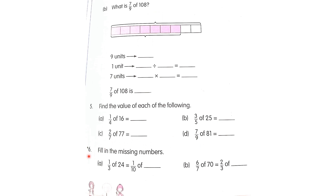You need to do parts C and D by yourself. Question 6 is fill in the missing numbers. For example, one over three of twenty-four. I hope you all got it. If you have any confusion, let me know. Now sit with your mothers and do page number 79 carefully. Have a good day!